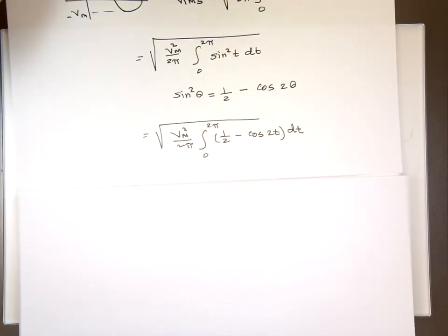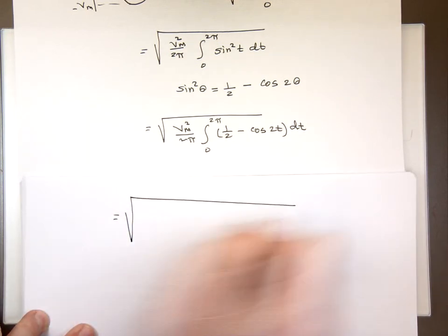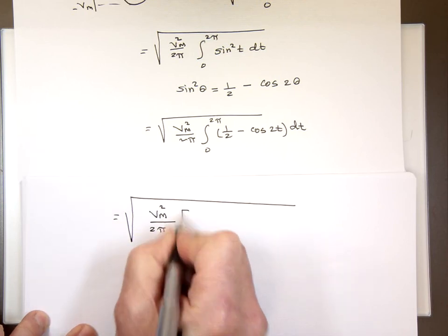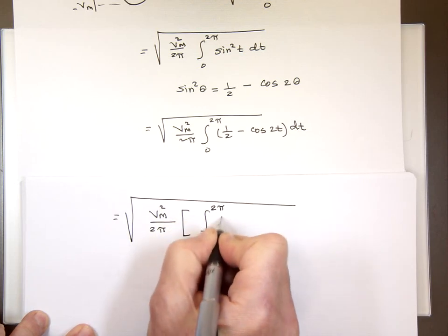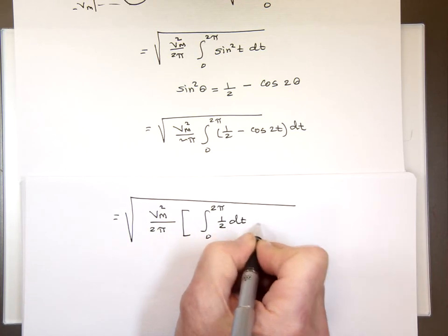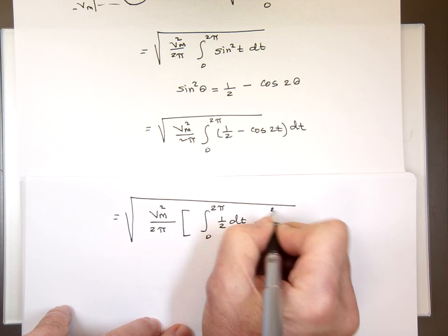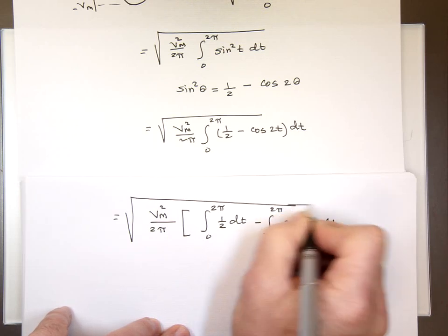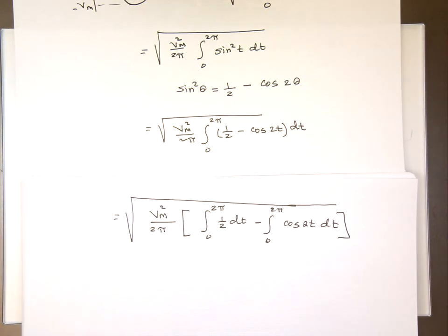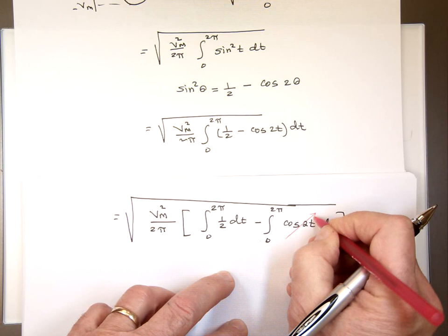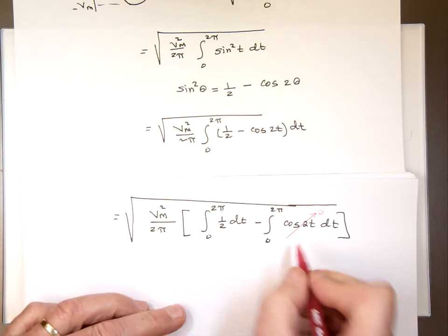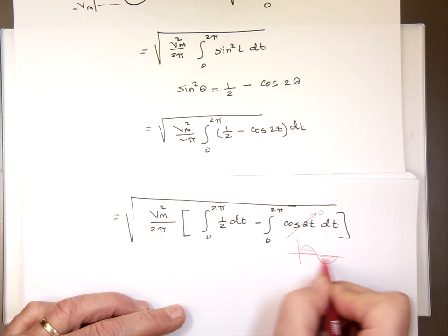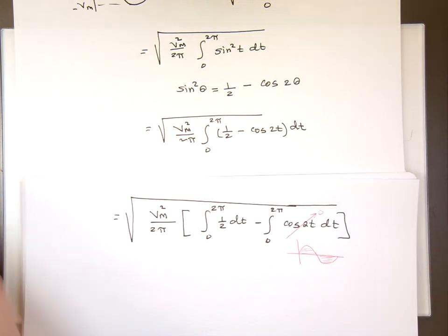I can break this one down into 2 separate integrals. This will be the integral from 0 to 2 pi of 1 half dt minus the integral from 0 to 2 pi of cosine 2t dt. When you integrate a cosine function or a sine function over a full period, the answer is 0. Why? Because the integral means give me the area. And for a cosine function and a sine function, when you look at the area, this is a positive area. That's a negative area. They add up to 0. That's why the integral of sine cosine over a full period is 0.